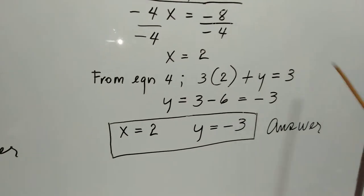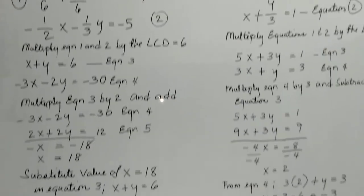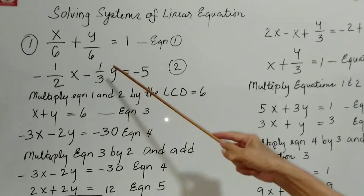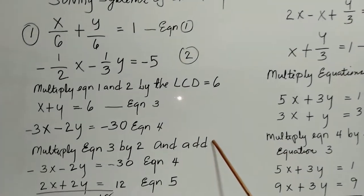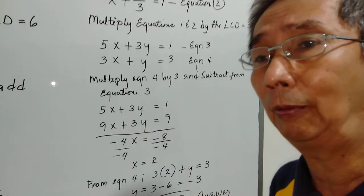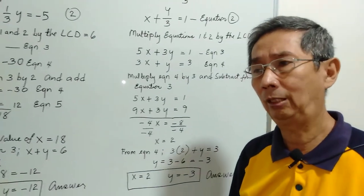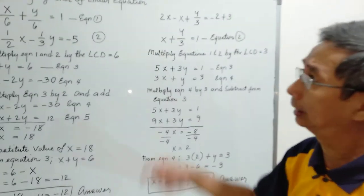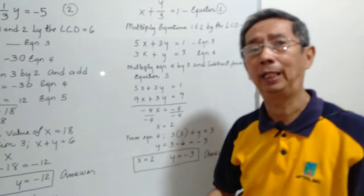That's how we solve systems of linear equations in two variables. Always remember to first get rid of all the fractions, simplify your equations, and then do the necessary operations. Thank you for watching — please visit my YouTube channel, subscribe, and click the notification bell for similar problems.